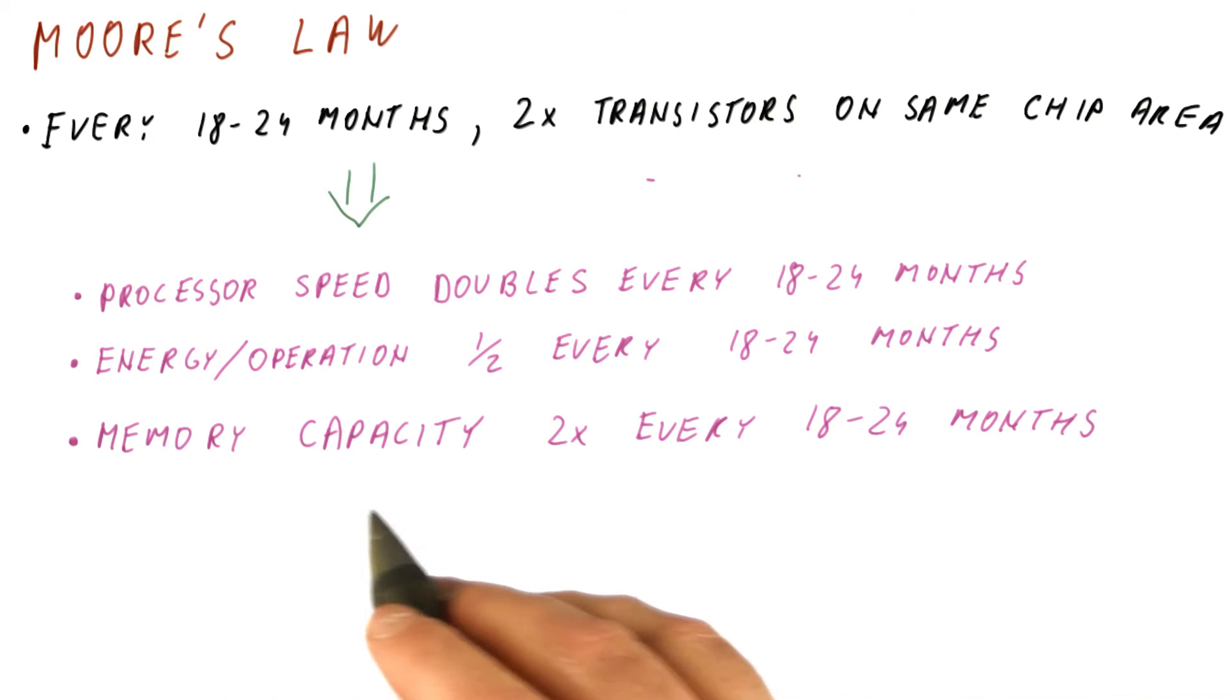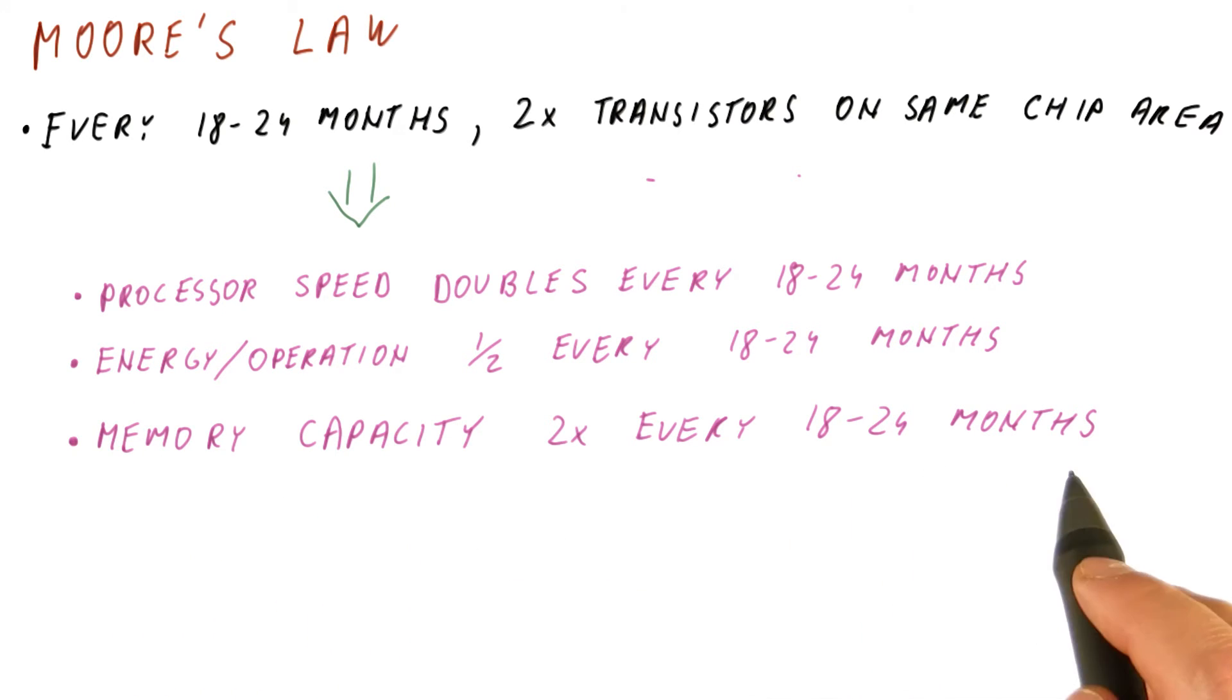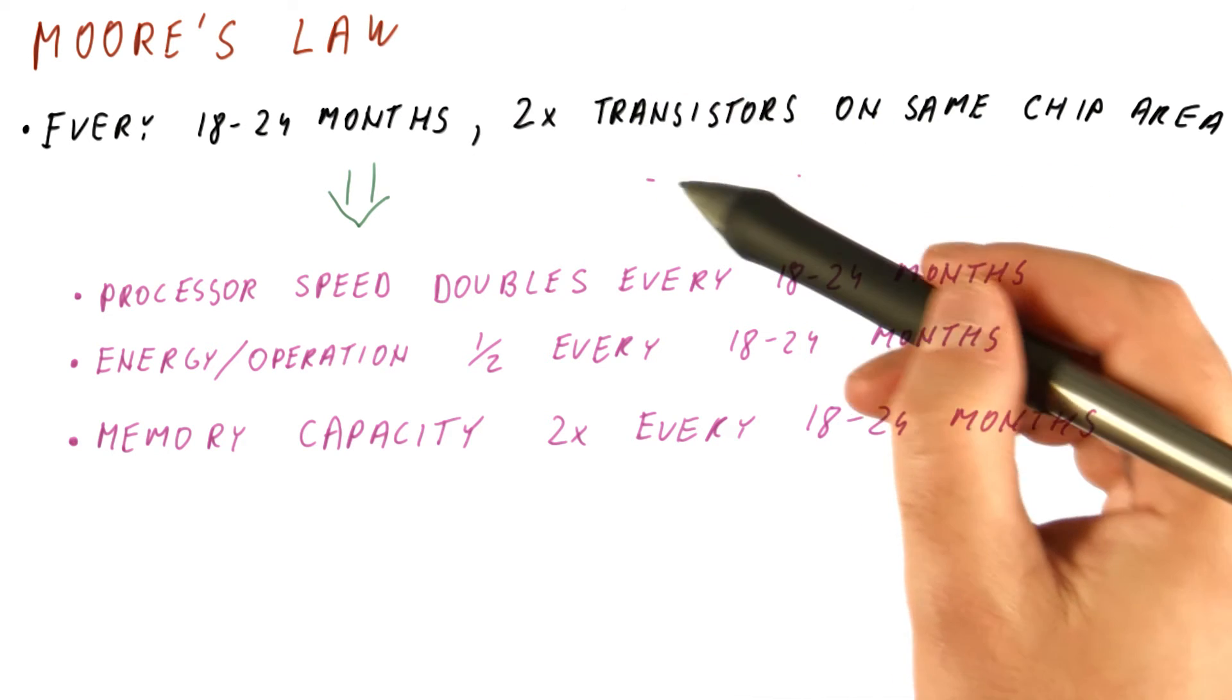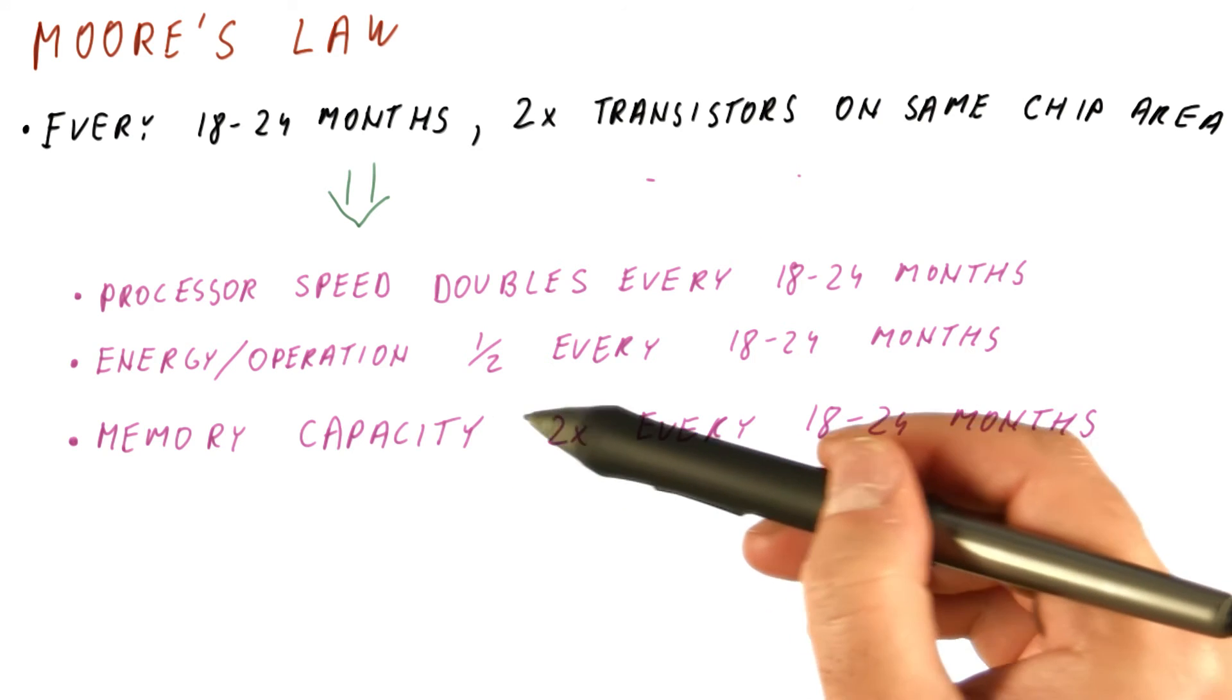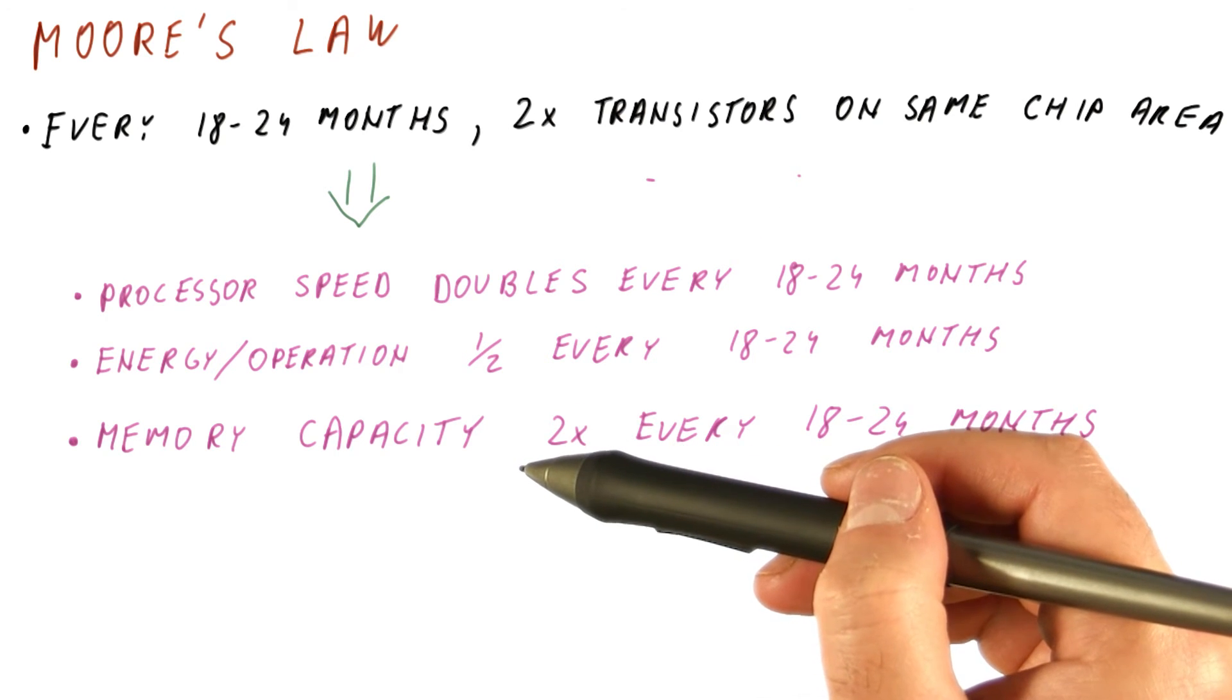And we try to double the memory capacity every 18 to 24 months. So we can fit twice as many transistors on the same chip area. We try to translate that into having twice as much memory if this is a memory chip.